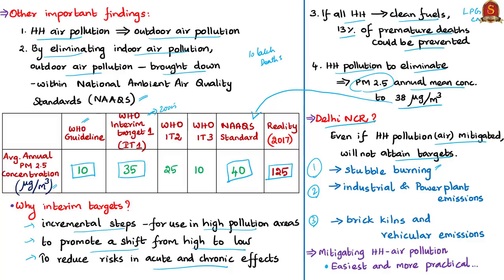Therefore, Delhi NCR would require more serious and stringent measures to attain air quality targets. The article concludes that India's pollution problem is much bigger than often perceived, requiring a multi-pronged approach to control emissions from industries, transportation and power plants. Mitigating air pollution at the household level is the easiest and most practical way for the government to reduce both household and outdoor air pollution nationally.